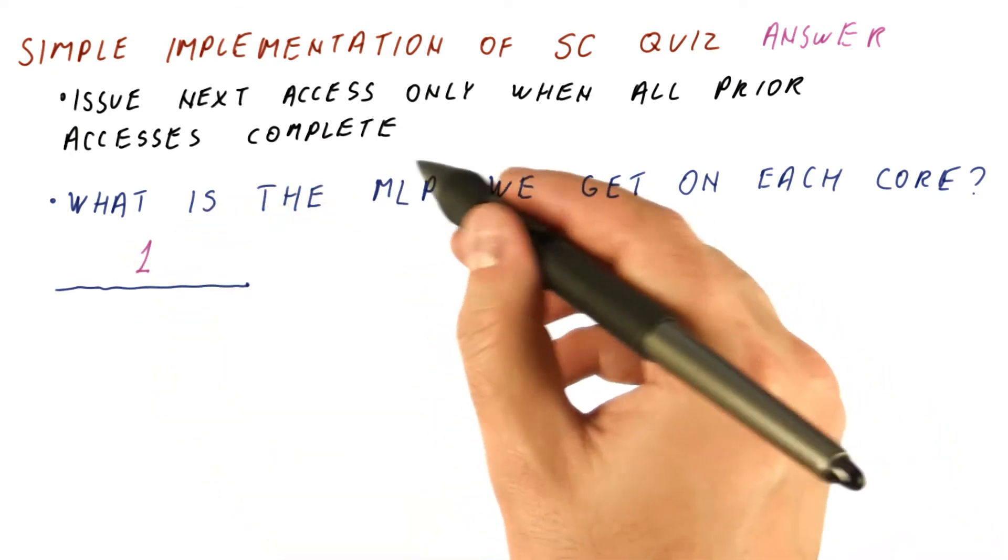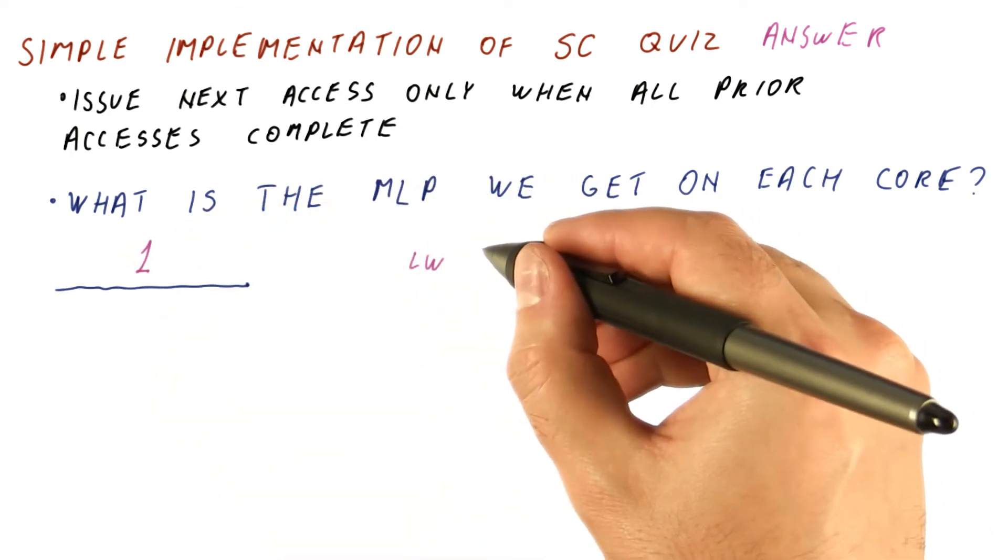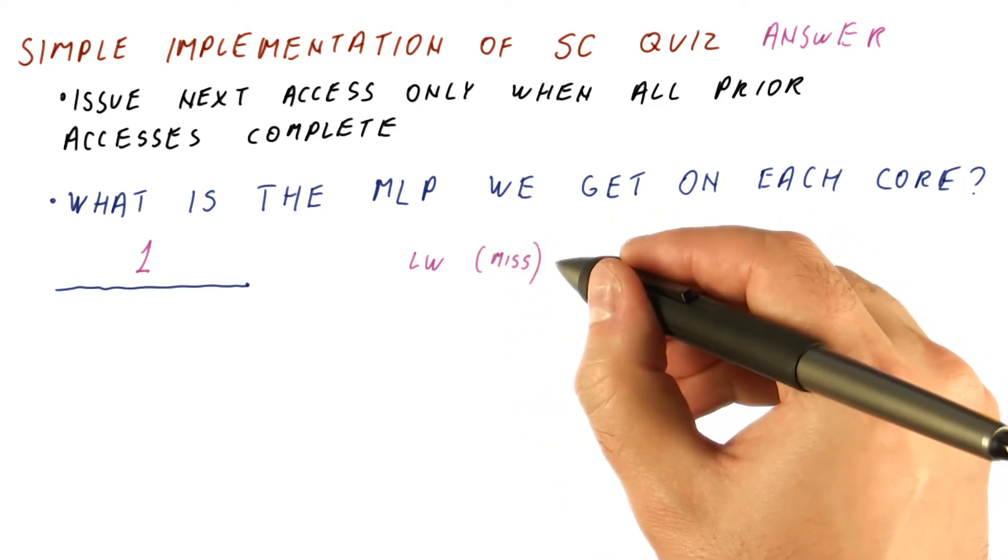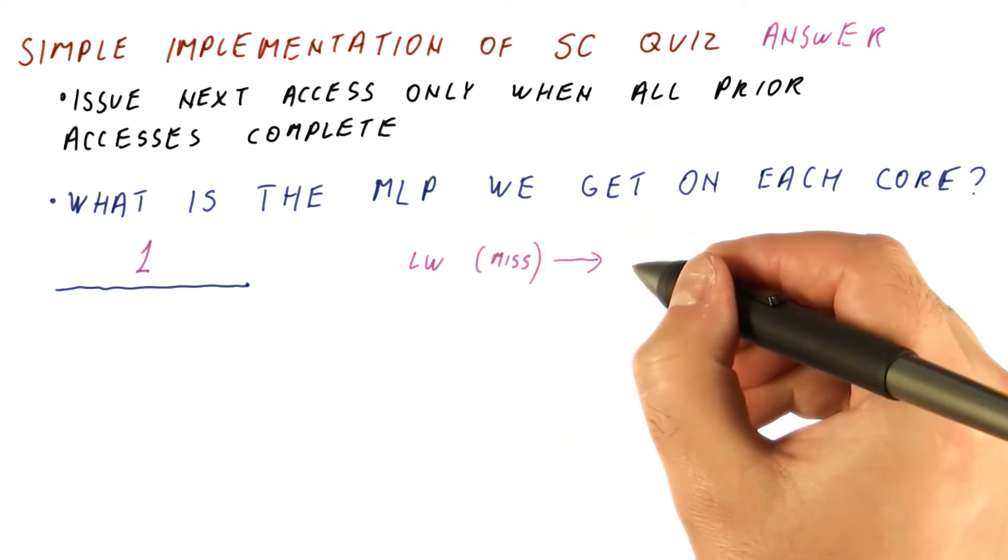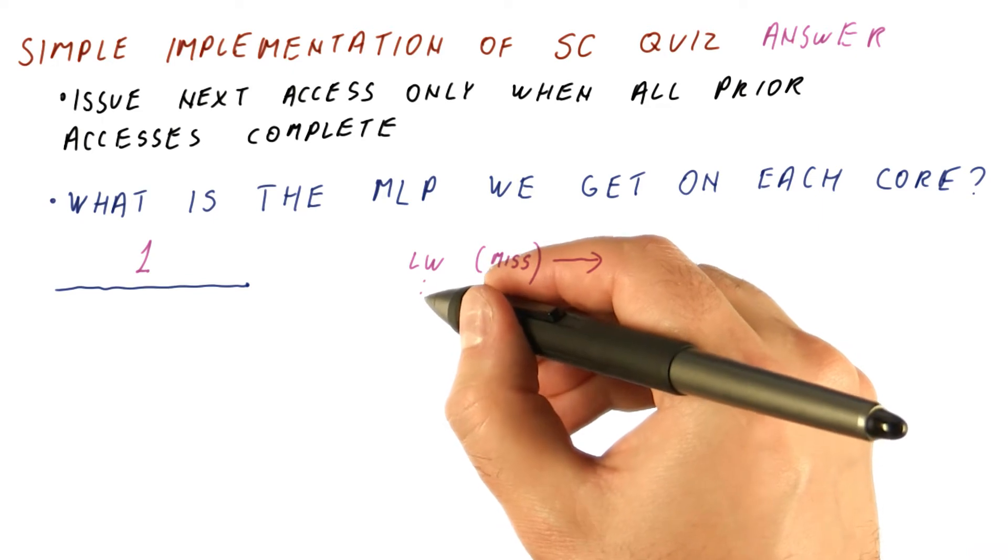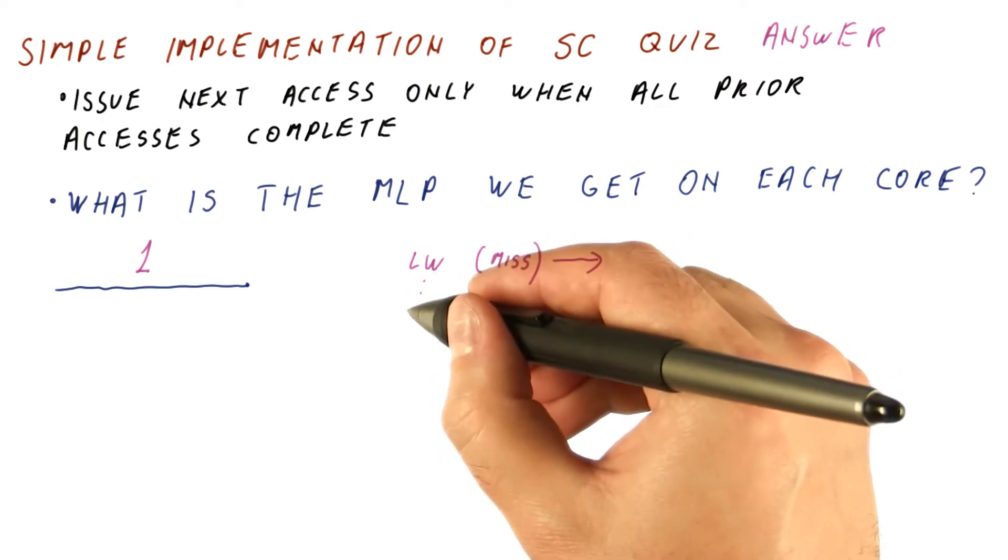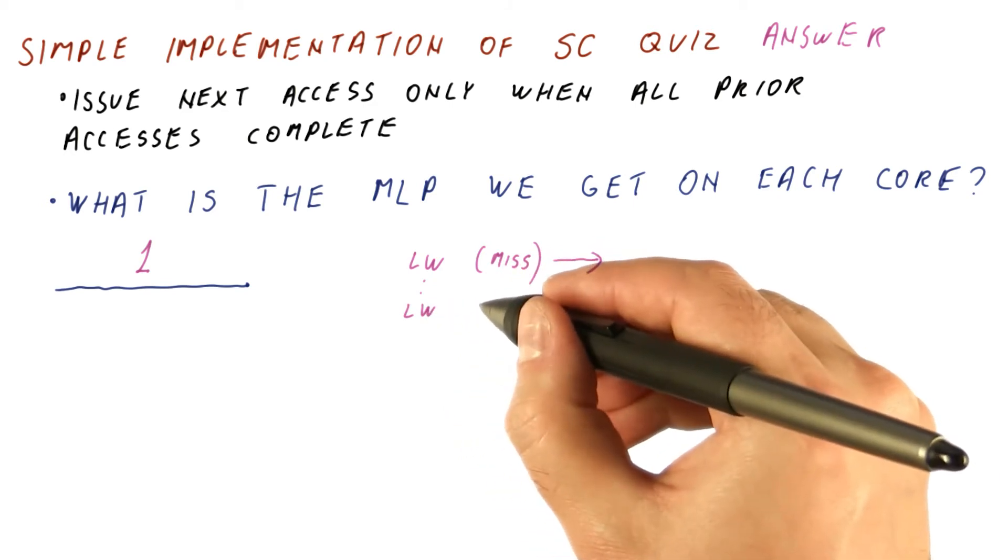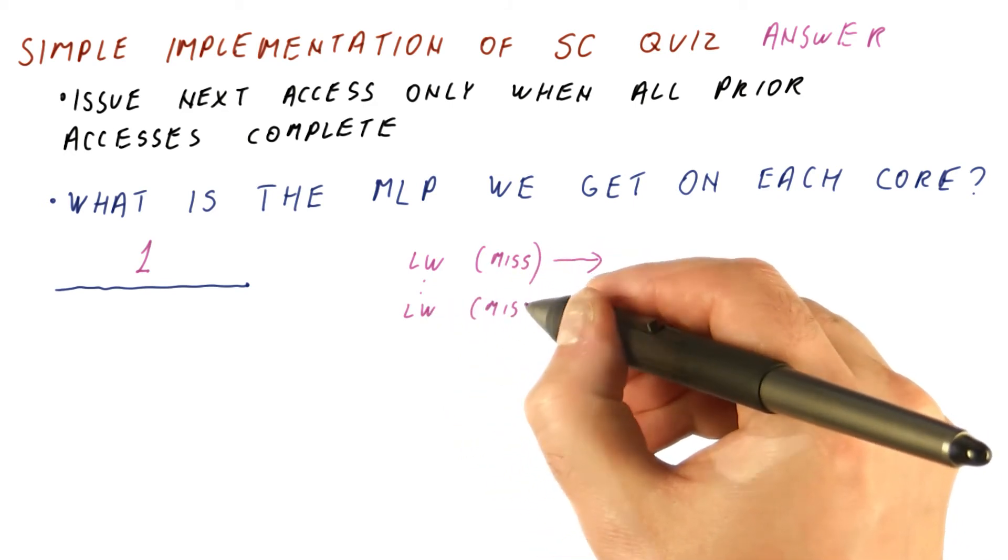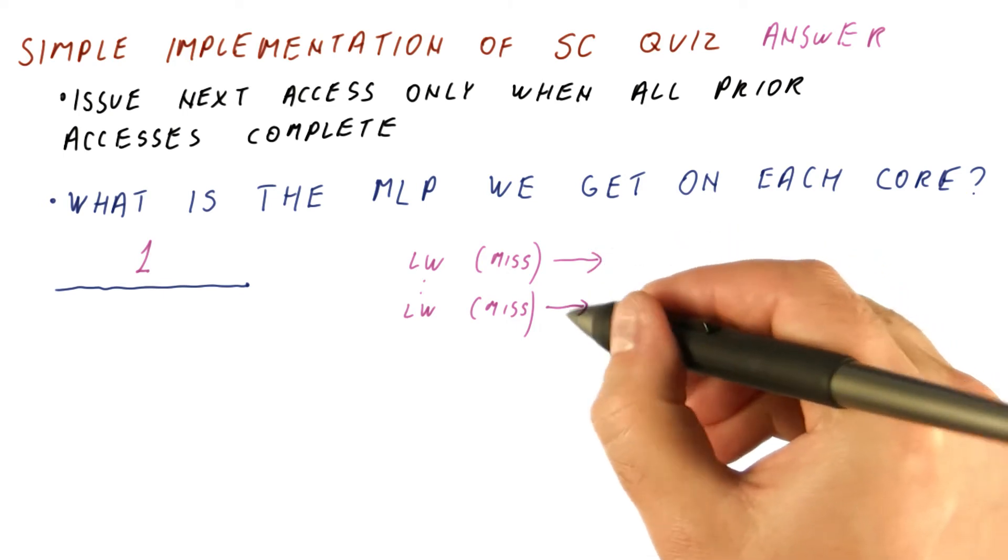Remember that memory level parallelism is about having a load that misses and gets sent to memory, and then our processor continues finding independent instructions in the hope of finding another load that is a miss and sending it to memory while the first miss is still going.